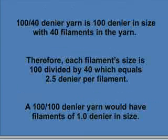Another important factor in a filament yarn such as denier is that the yarn bundle is made of many filaments. If a 100 denier yarn has 40 filaments, then each filament would be 2.5 denier in size. A 100 denier yarn with 100 filaments would have filaments of 1.0 denier in size.